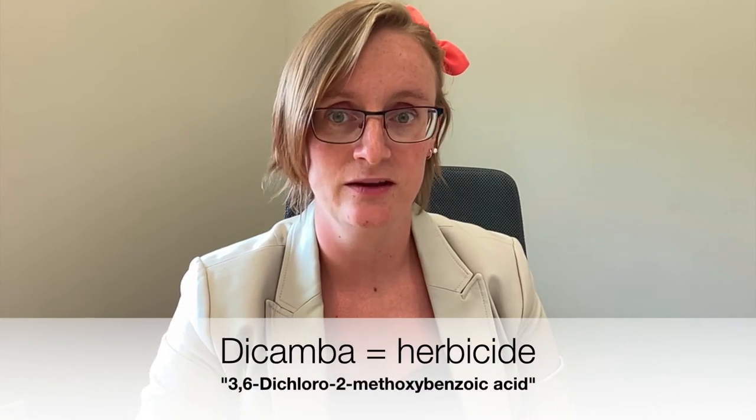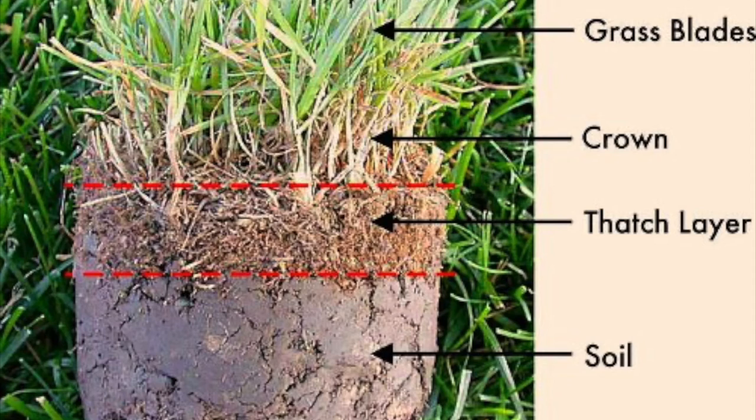The objectives were to measure how much dicamba, the pesticide, breaks down in the thatch. The thatch is that layer of plant material between where the grassy layer and the roots are. It's made up of all of the previous year's dead leaves from the grass plants, and as the grasses grow, it just naturally builds up.